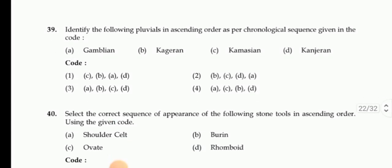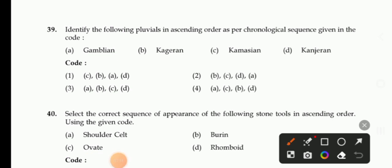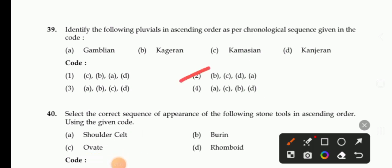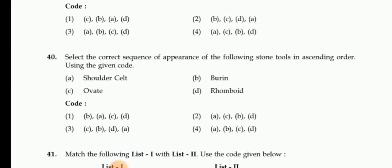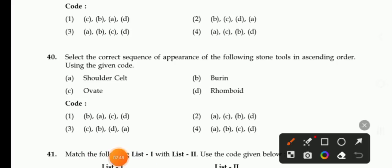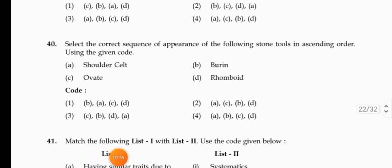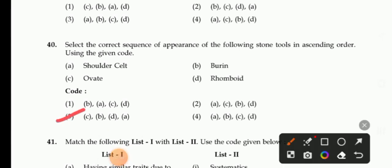Next question: Identify the following Blue Wheel in ascending order as per chronological sequence — Gamblian, Kajirian Commission, Conjuring. Code options: CBAD, BCDA, ABCD, ACBD. The right answer is 2. Next: Select the correct sequence of appearance of the following stone tools in ascending order — shoulder cells, burin, ovate, rhomboid. The right sequence is C: ovate 1, burin 2, rhomboid 3, shoulder cell 4.